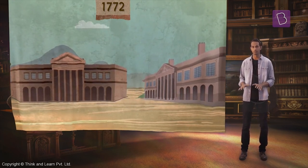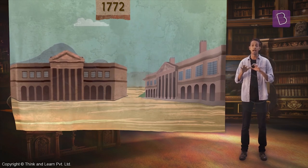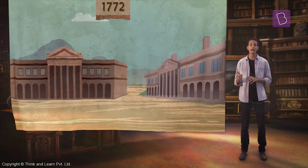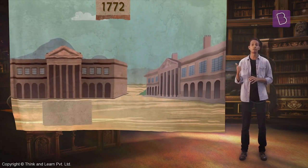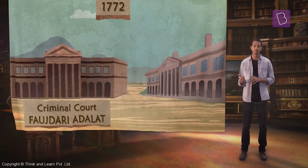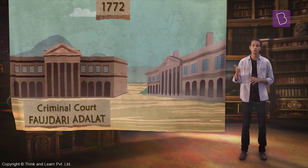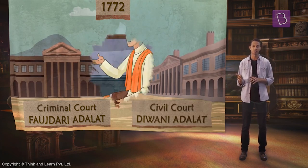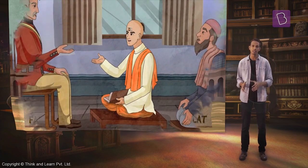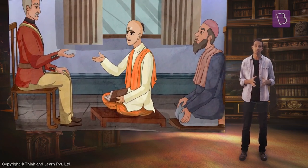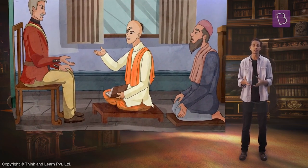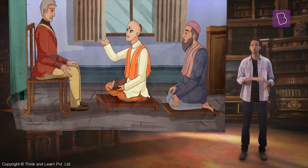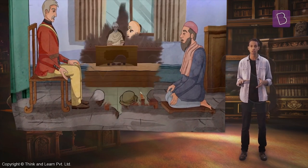Under the new system, each district would have two courts: a criminal court known as a Forjdari Adalat, and a civil court known as the Diwani Adalat. The British appointed Malvies and pundits to explain pre-existing Indian laws to European district collectors who presided over civil courts.